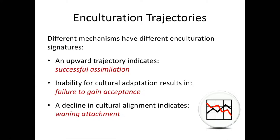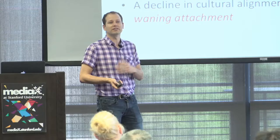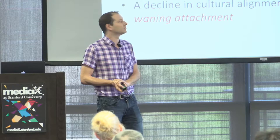I want to think about enculturation as a process — a journey that one takes in their organizational life that they need to put emotional and cognitive work into. The argument we're going to make is that different mechanisms have very different enculturation signatures. An upward trajectory will be an indication of successful assimilation; an inability to adapt will result in failure to gain acceptance and involuntary departure. A decline in cultural alignment post-adaptation portends voluntary departure, reflecting waning attachment to the organization.